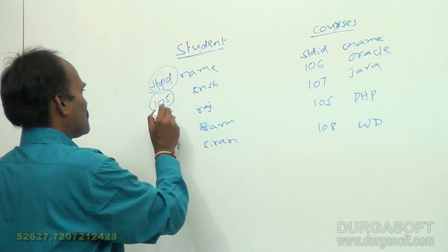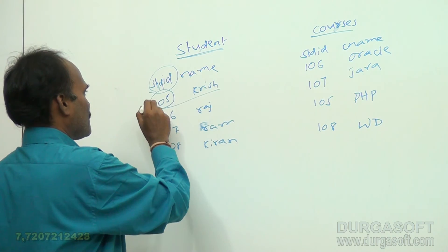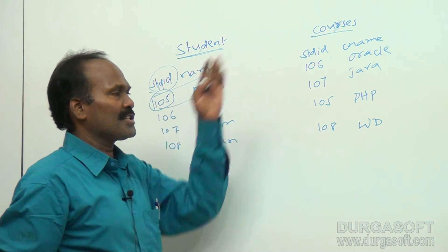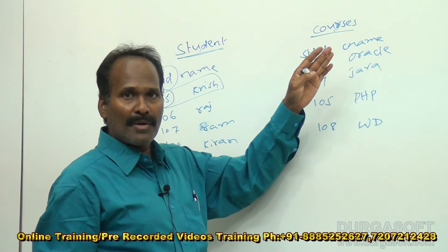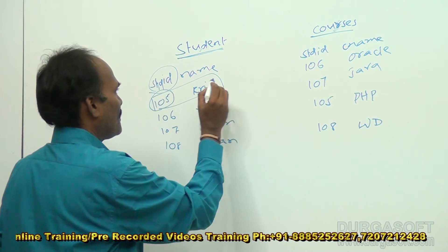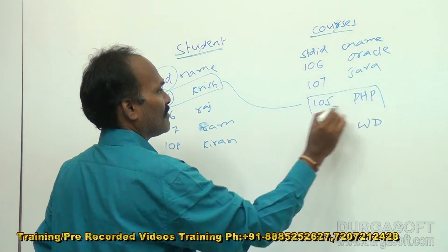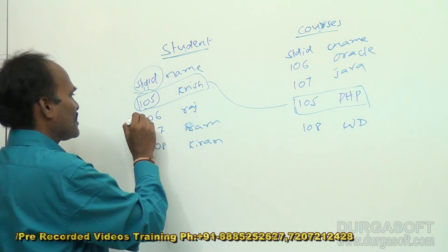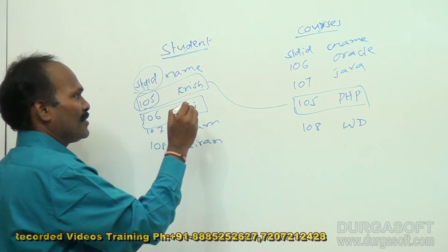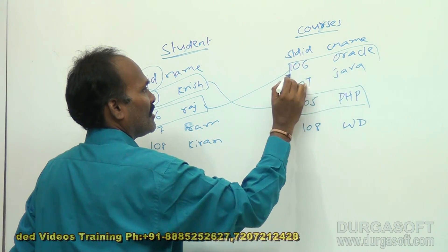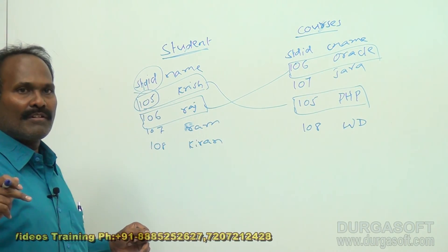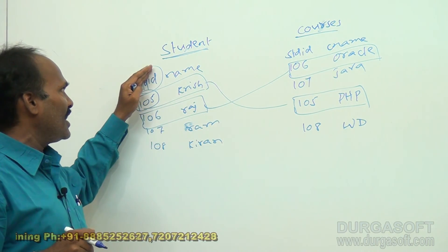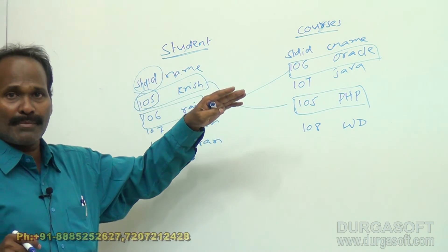For student ID 105, the corresponding student information is 105 and Krish. Using 105, we can locate the matching record in the courses table. The courses table maintains all courses along with the student IDs. For 105, this is a matching record, and for 106, this is also a matching record. That means full information can be displayed by using a JOIN concept - retrieving all student IDs, names, and course names.